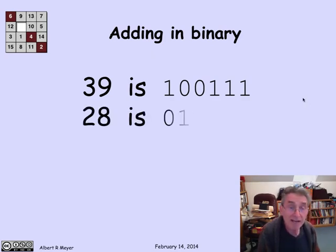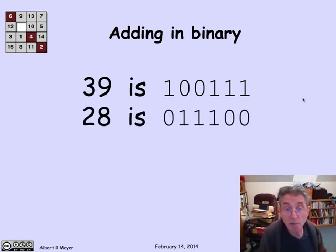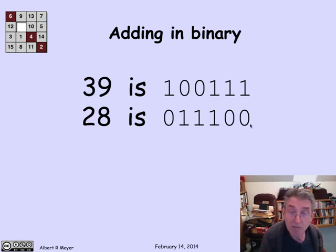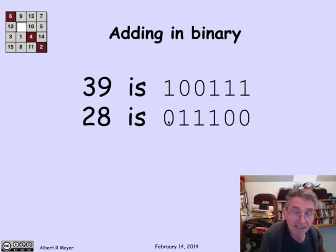Likewise, the binary representation of 28 is 0, 1, 1, 1, 0, 0. I'll let you check how that works with contributions from 1, 2, 4, 8, 16, and 32.